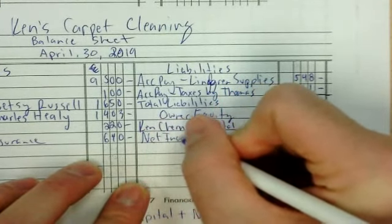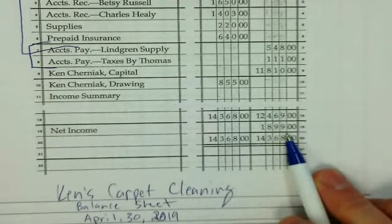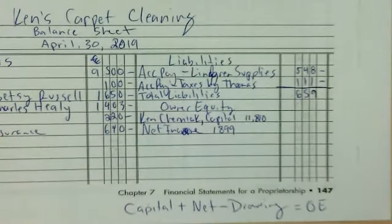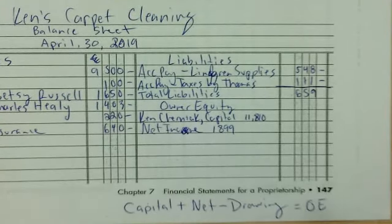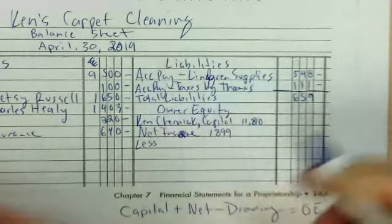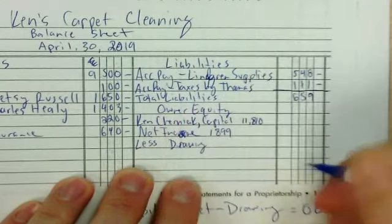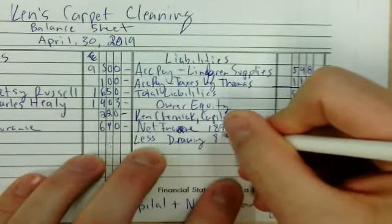The next line is going to be net income. Net income from the income statement is $1,899. And then, following the formula — capital plus net minus drawing — we're going to do minus drawing next. They call it 'less drawing.' Less lets you know that you're going to subtract. The drawing total is $855.